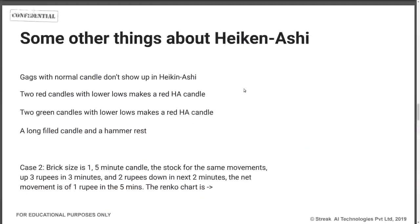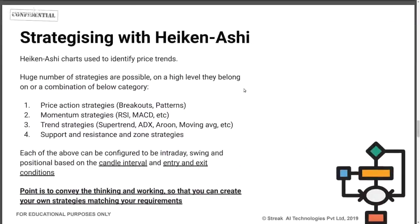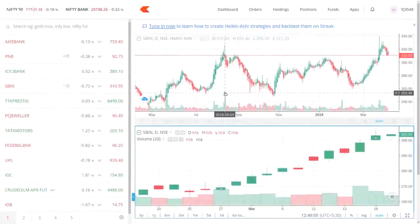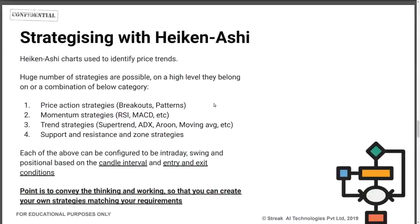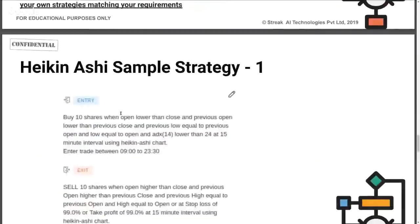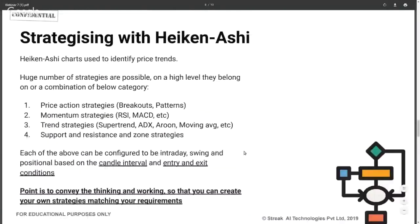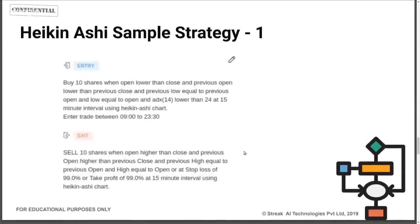Now let's get to strategies with Heikinashi, which most people have requested. You can build a lot of strategies — from price breakout to momentum strategies — because Heikinashi captures volume as well, unlike Renko. Volume-based filters like comparing volume to a moving average can also be used. In this webinar, we'll cover three strategies: a chart pattern on Heikinashi, a Supertrend and ATR combination, and a Supertrend-only strategy.